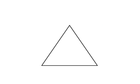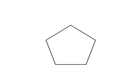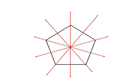Let's look at an equilateral triangle — it has three lines of symmetry: one, two, and three. Let's look at a regular pentagon — it has five lines of symmetry: one, two, three, four, and five.